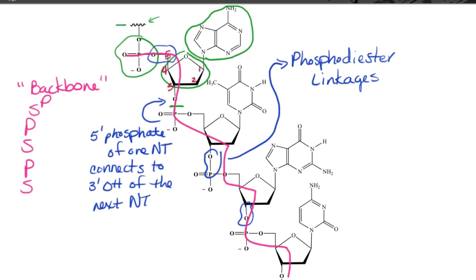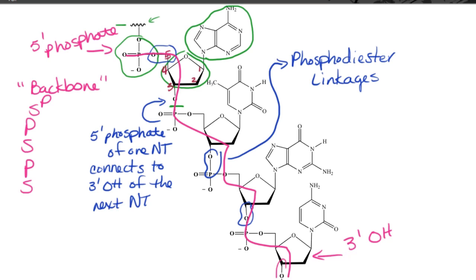This would be standard for hooking together nucleotides of DNA and also for hooking together nucleotides of RNA. If we were to look at the whole molecule, one end would always have the five prime phosphate, and then the other end would always have the three prime hydroxyl hanging off of it. So we do always have two unique ends to any nucleic acid.